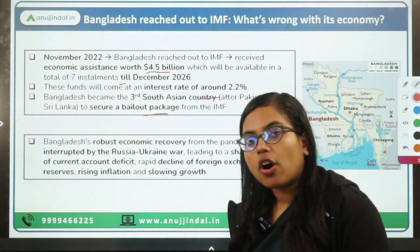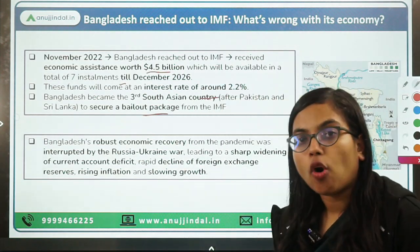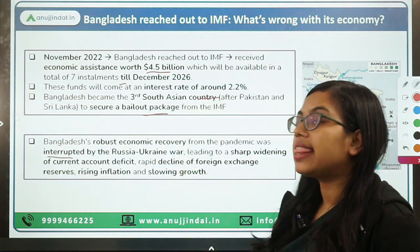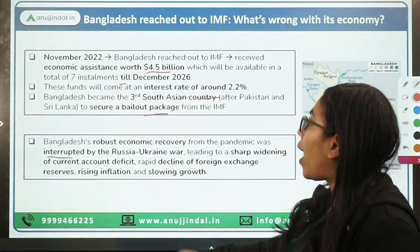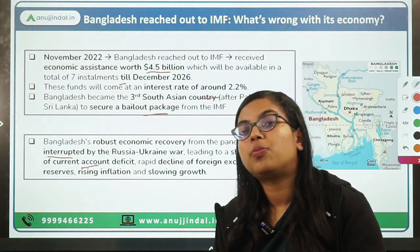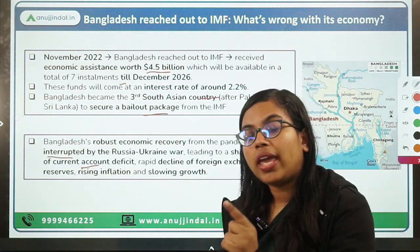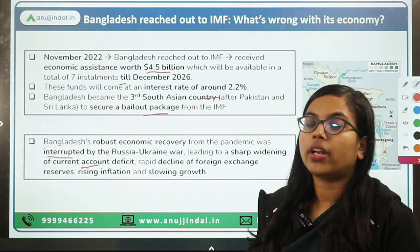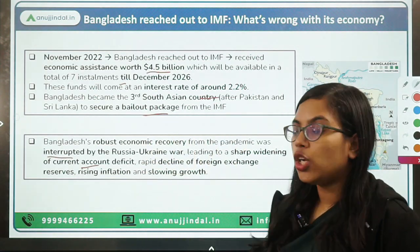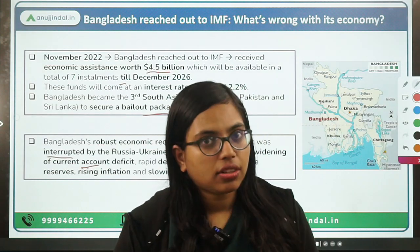Why was this package provided? Because the Bangladesh economy, which was trying to recover from the COVID pandemic, could not do so because of the ongoing war in the Russia-Ukraine area — the recovery was interrupted. That resulted in a sharp widening of its current account deficit. Their current account deficit increased because Bangladesh is an export-oriented country, and since people reduced demand for goods, they were unable to make exports. At the same time, whatever they were importing, they were actually importing inflation due to the Russia-Ukraine war.